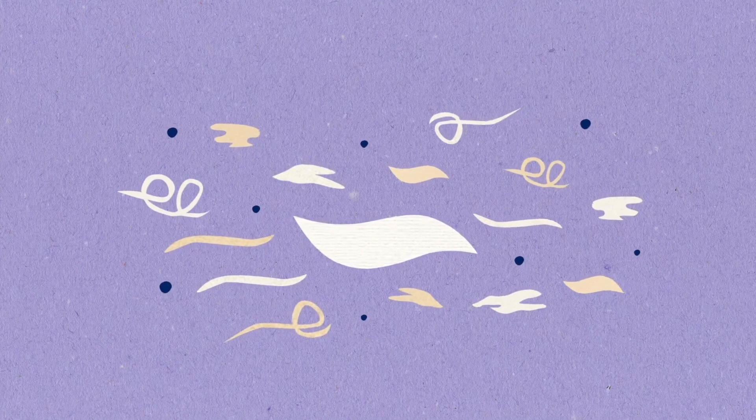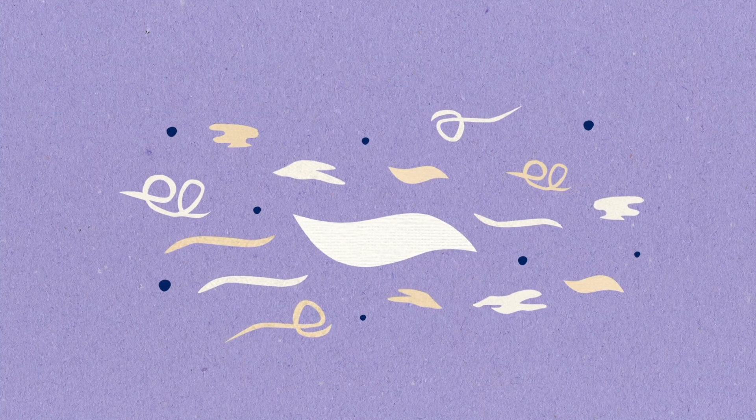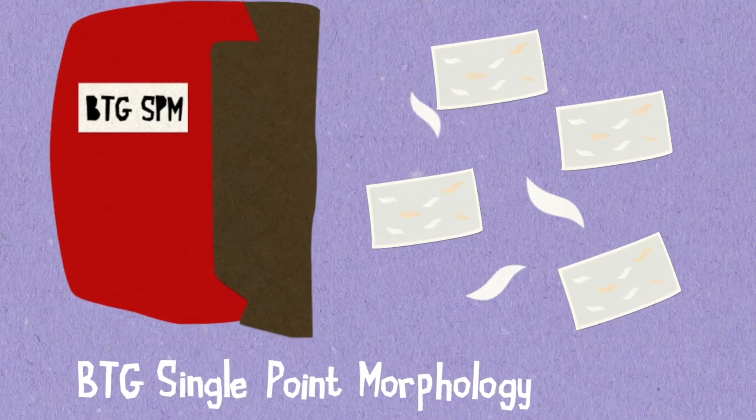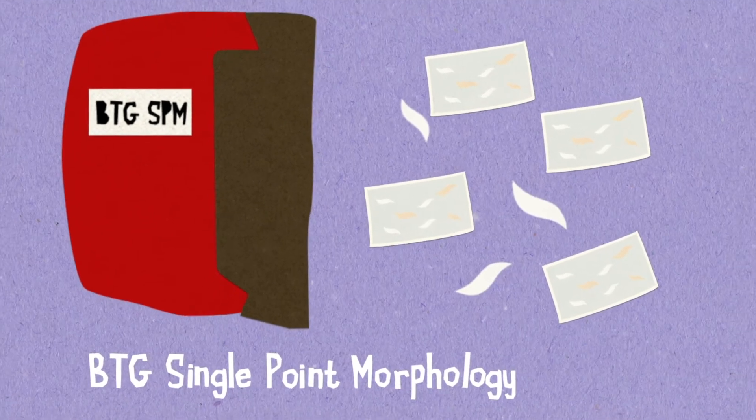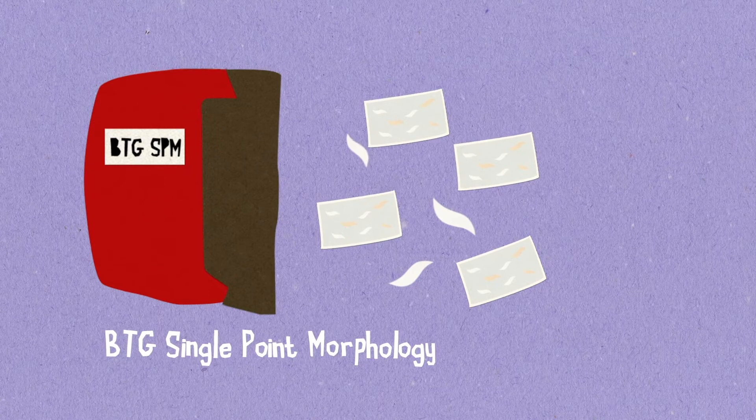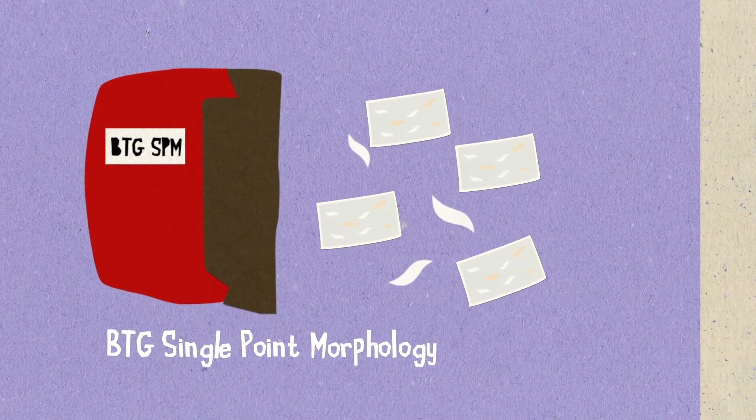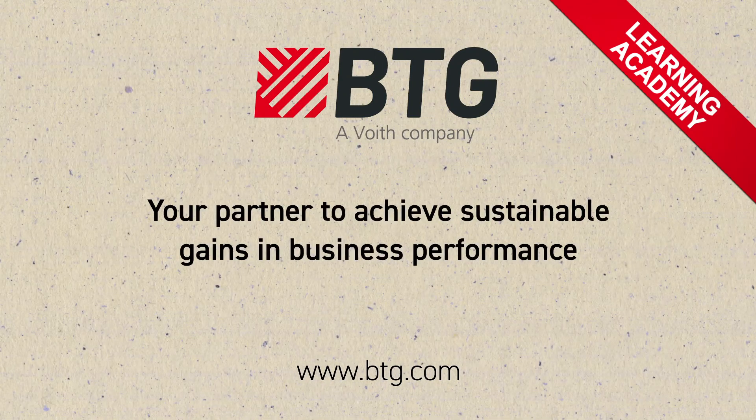The BTG single point morphology measurement will give you the information you need to understand your fibers and pulping processes. Combining this measurement with BTG's MaxSuite Advanced Process Control System will further optimize your process, resulting in improved quality and throughput, while lowering process costs.